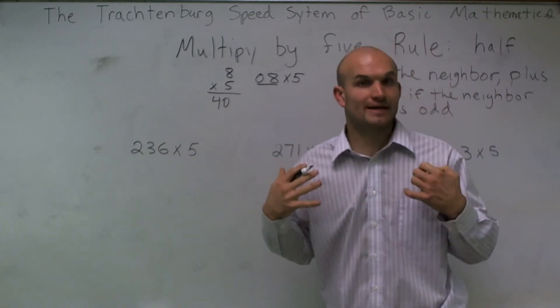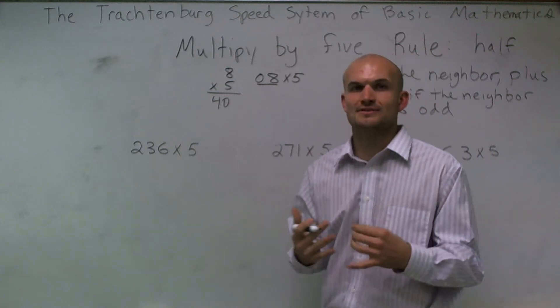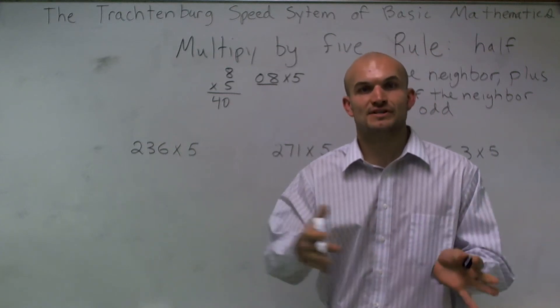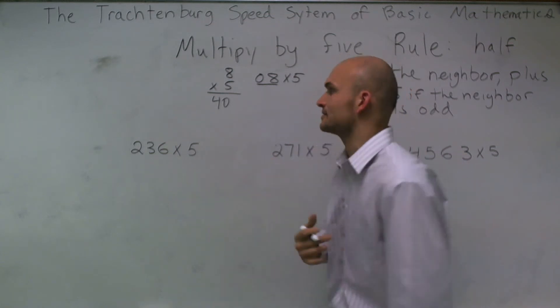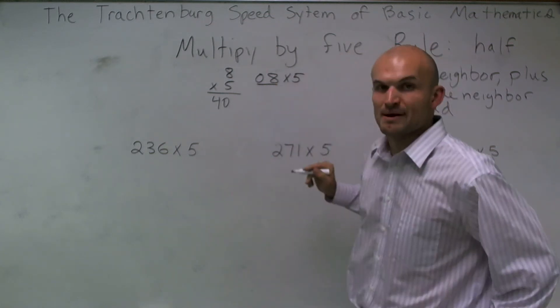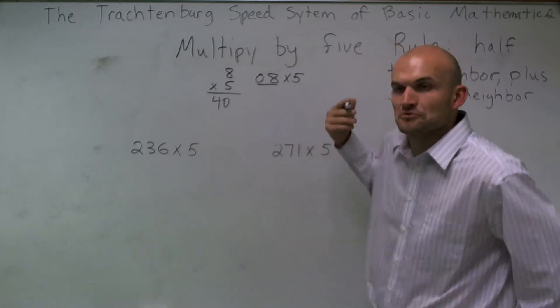And that rule allows us to multiply different numbers by 5 in a very systematic way. And through practice, we can multiply them faster and faster. So if I was going to apply my rule to 8 times 5, you'll be able to see that this still works.